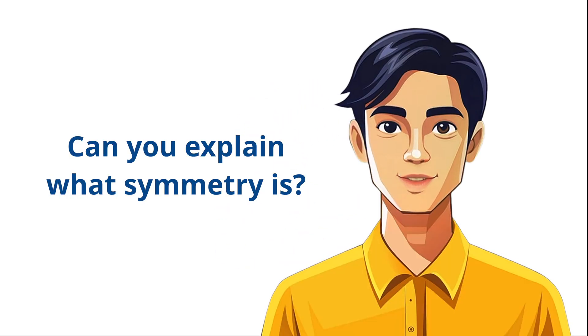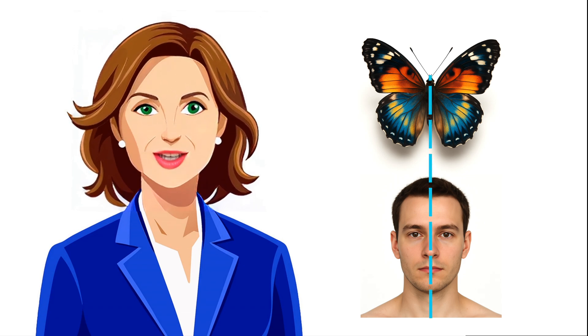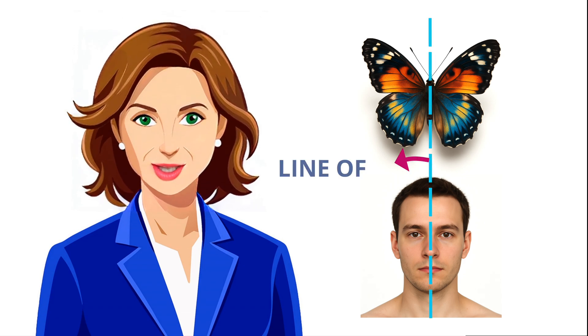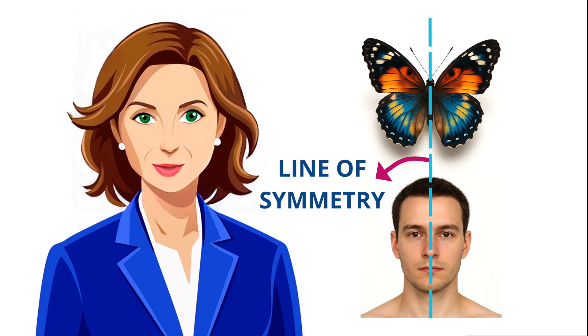First, can you explain what symmetry is? Symmetry is when one side of an object, shape, or design mirrors the other. Think of a butterfly's wings or a person's face — they look the same on both sides of a central line. That central line is called the line of symmetry.